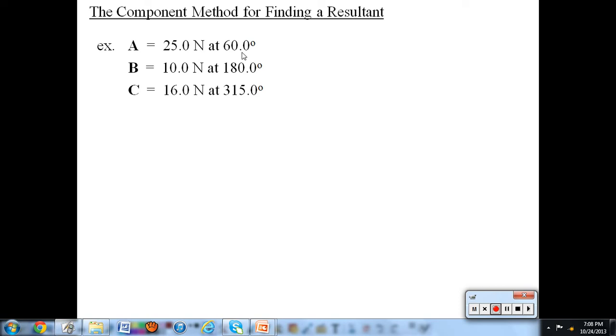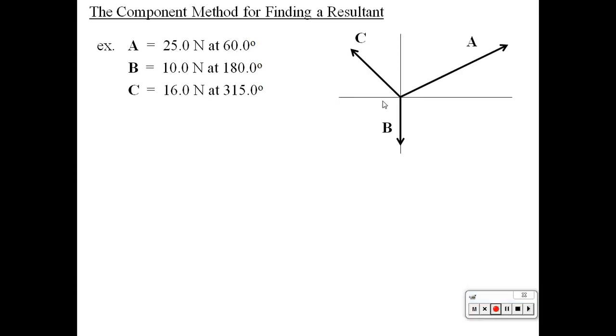Vector A is 25 Newtons at 60 degrees, B is 10 Newtons at 180 degrees, and C is 16 Newtons at 315 degrees. First thing we should do is draw a sketch. So I have a sketch here.